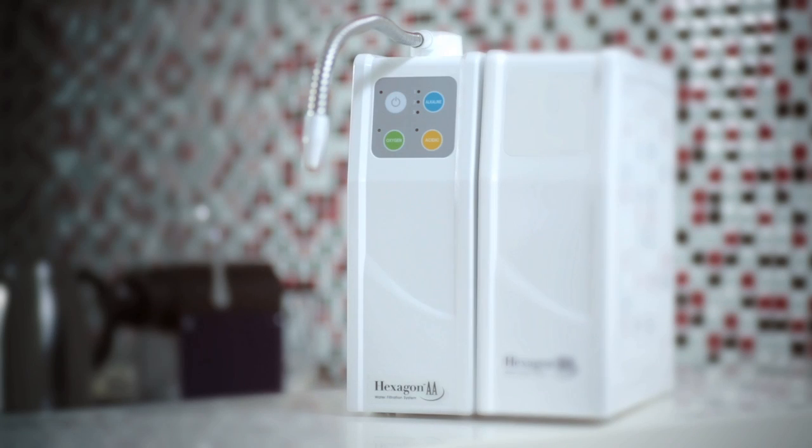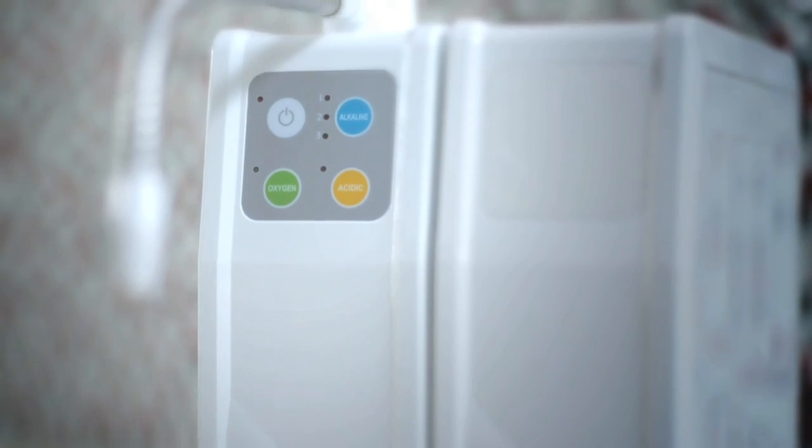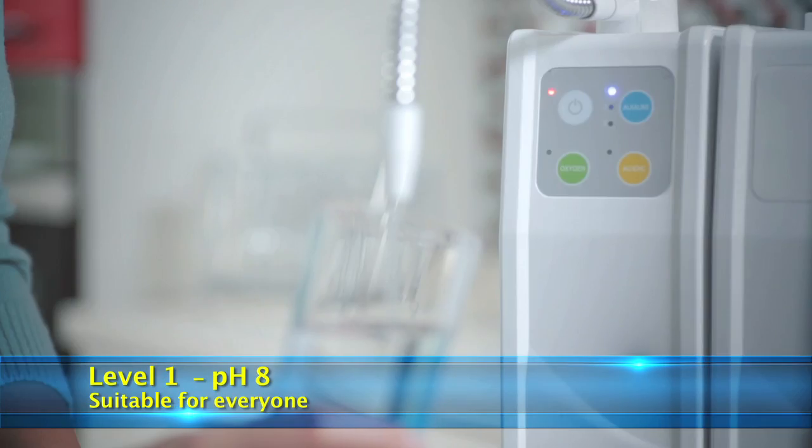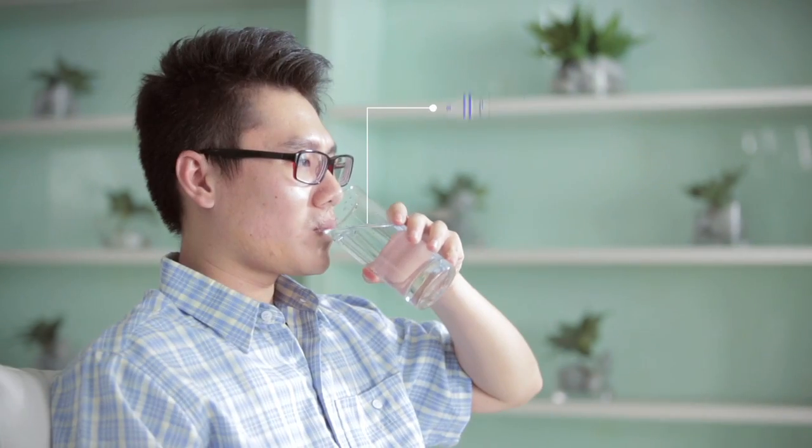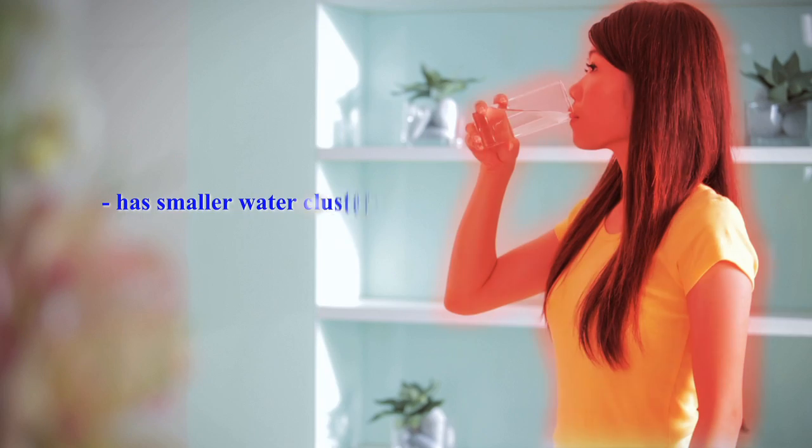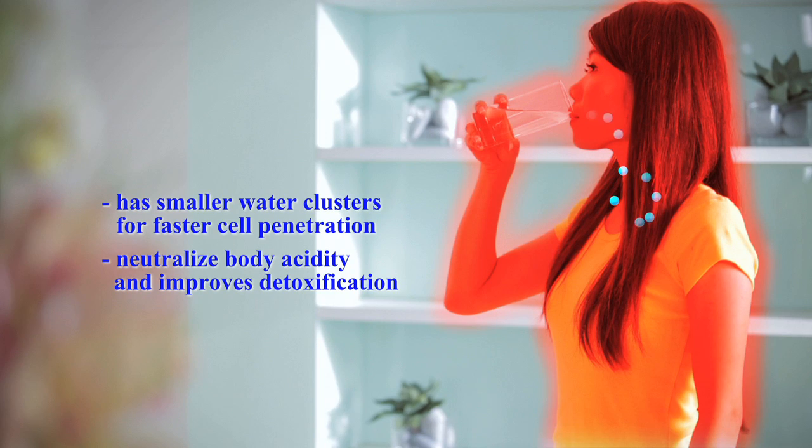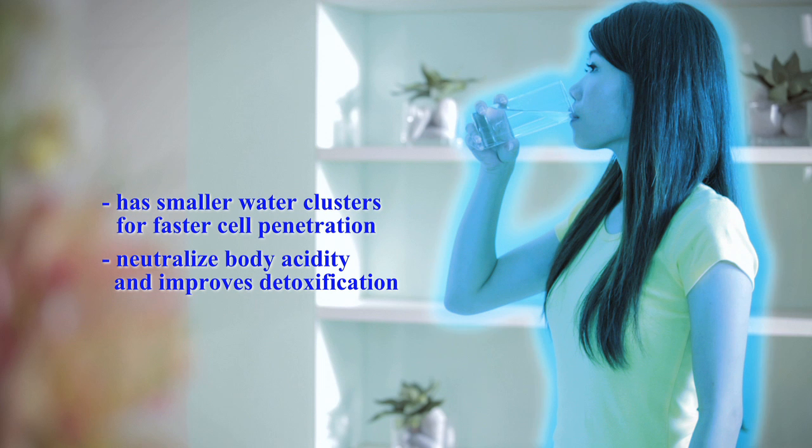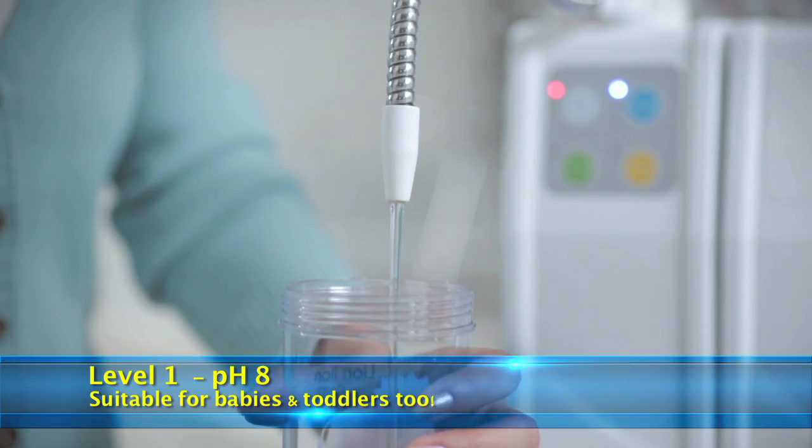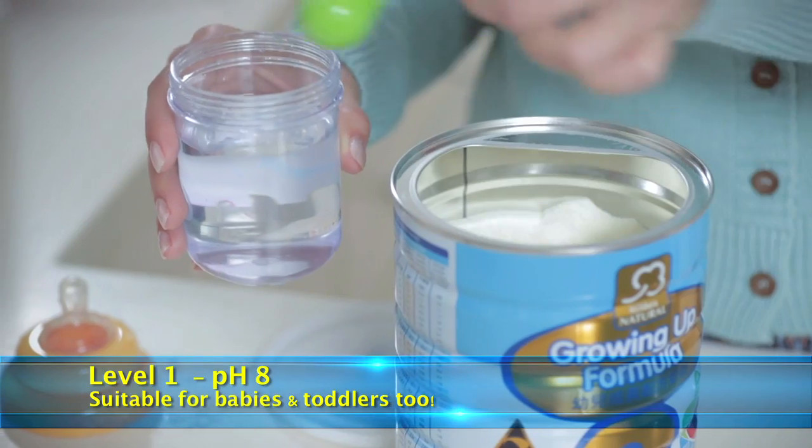The Hexagon AA water filtration system provides you with drinking water with amazing properties. Alkaline level 1 is alkaline water with antioxidant properties and infused with ionised minerals essential to health. The water has smaller water molecular clusters which can be absorbed by cells faster, thus improving the rate of nutrient transportation as well as detoxifying rate. Level 1 with pH 8 is suitable as a daily drinking water for all, including babies and toddlers.